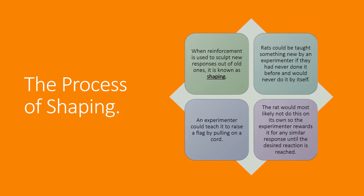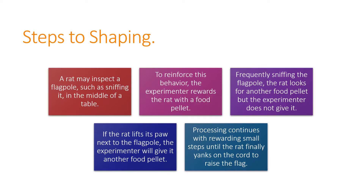Let's say an experimenter wants to teach a rat to raise a flag by pulling on a cord. The rat would most likely not do this on its own unless provided with some reward. The experimenter rewards the rat for any stimulus-response that is similar to the goal. So, with a rat in a box with a flagpole and cord in the middle, the rat walks around, inspects the flagpole, sniffs it. To reinforce going up to the flag, the experimenter gives the rat a food pellet.